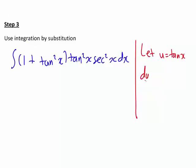So du dx equals sec squared x, as we said before, and that means du is sec squared x dx. You can see this means we can do a very nice direct substitution here.